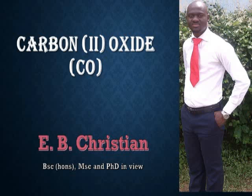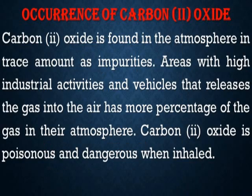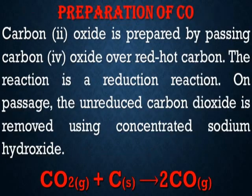Hello students, welcome to chemistry class. Last class we looked at carbon dioxide (CO₂). This class we're going to look at carbon monoxide (CO). Remember that carbon monoxide is otherwise called carbon two oxide. The occurrence of carbon monoxide: it is found in the atmosphere in trace amounts as impurities in areas with high industrial activities and vehicles that release gas. The atmosphere has a higher percentage of this gas. Carbon monoxide is dangerous when inhaled.